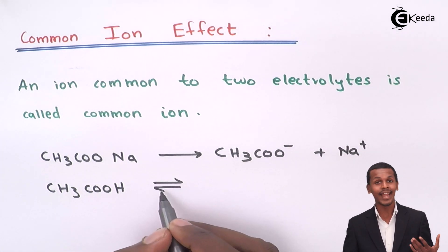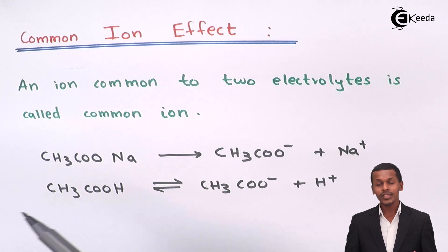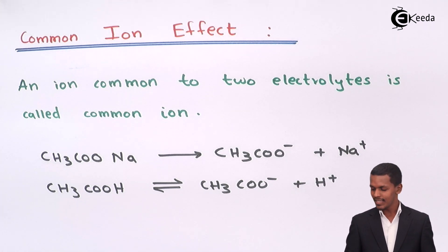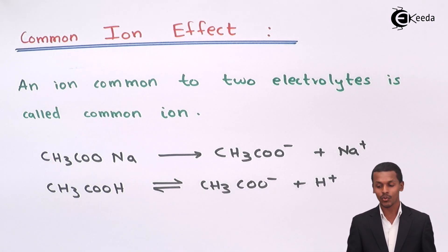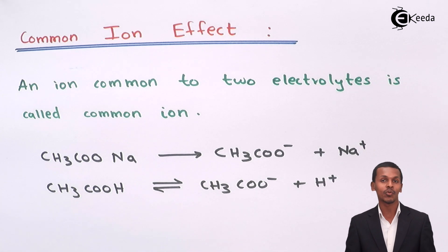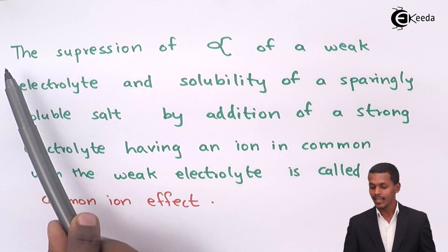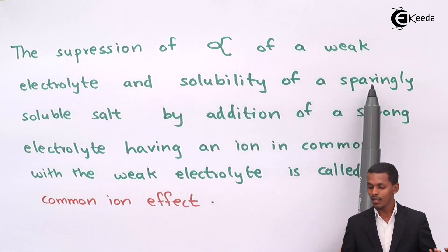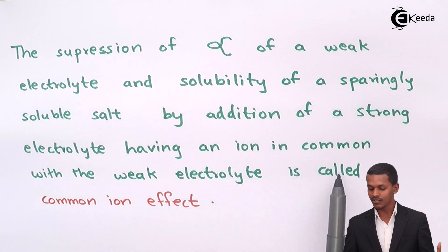The weak electrolyte will not dissociate completely and will also form an acetate ion along with H+. So if both electrolytes are present in the same solution, the acetate ion is common to both — that is the common ion. The suppression of the degree of dissociation of a weak electrolyte, or the solubility of a sparingly soluble salt, by addition of a strong electrolyte having an ion in common with the weak electrolyte is called the common ion effect.